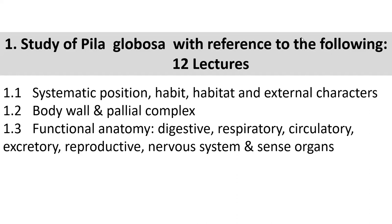Then habit - what is their feeding habit, living habit, mating habit? All these usual habits: how do they feed, how do they walk, how do they live? And then habitat - their residential place. Habitat is the residential address, while systematic position is the zoological address amongst all the crowd of animals. When we start our blackboard teaching, I will draw the tree diagram of all animals, non-chordates and chordates.